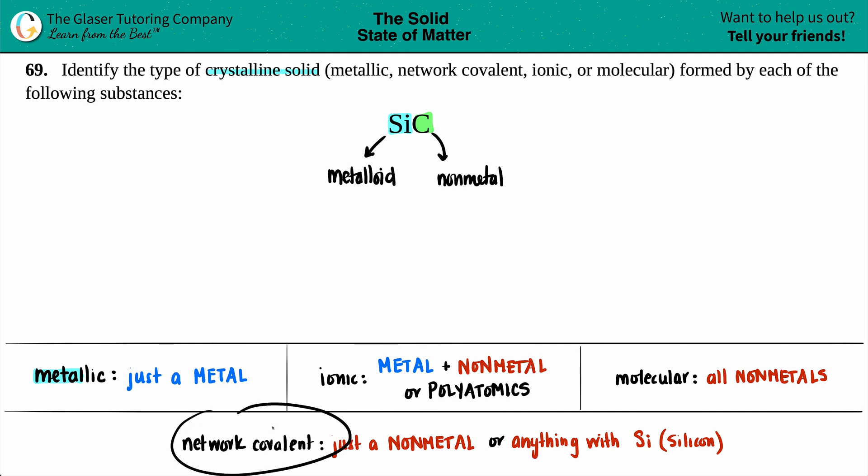The last one is network covalent, and network covalent is kind of the opposite of a metallic one, in which metallic you would just see one single metal, but a network covalent you would just see one single non-metal, kind of just like if carbon was by itself. But there's another criteria, and it's in which you would see anything with silicon, Si.